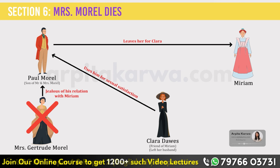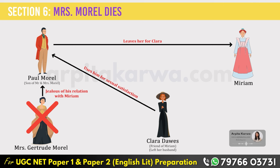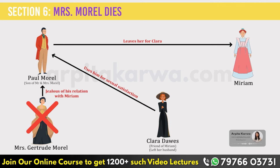Paul realized he shouldn't be in a relationship with Clara, so he thought of going back to Miriam, but it didn't work out. After his mother's death, Paul was alone and wanted to commit suicide so that he could be with his mother. But at the end of the novel, Paul chose to continue living his life. It is essentially a sad story of Mr. and Mrs. Morrill and their sons — the ups and downs of typical lower-middle-class struggles.